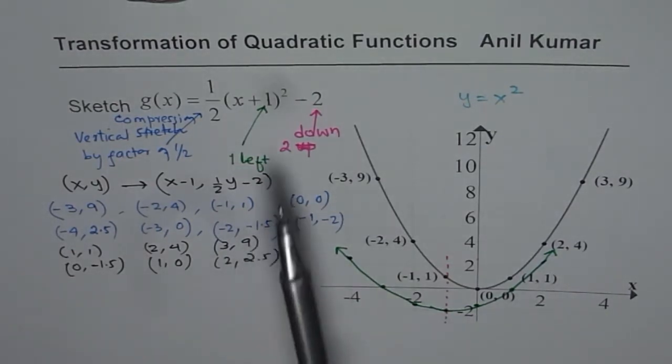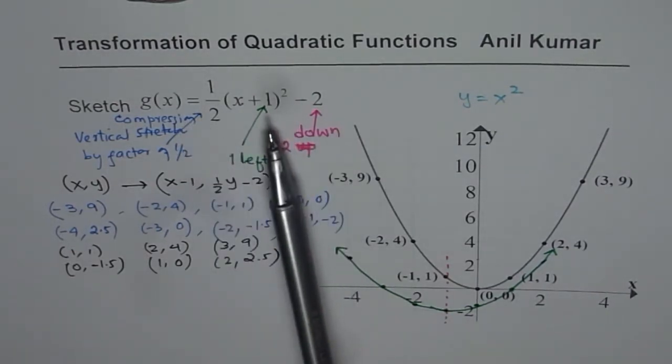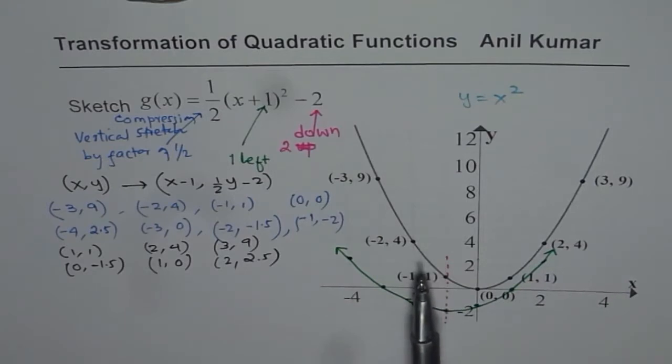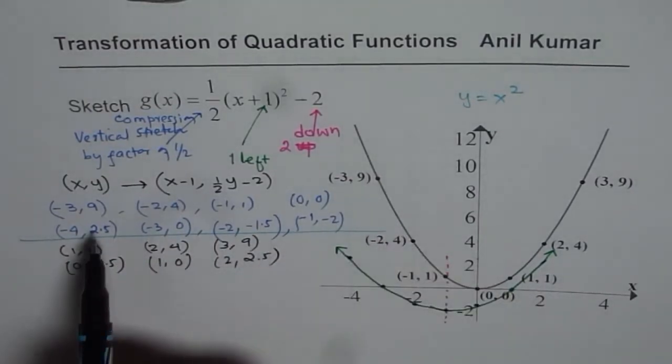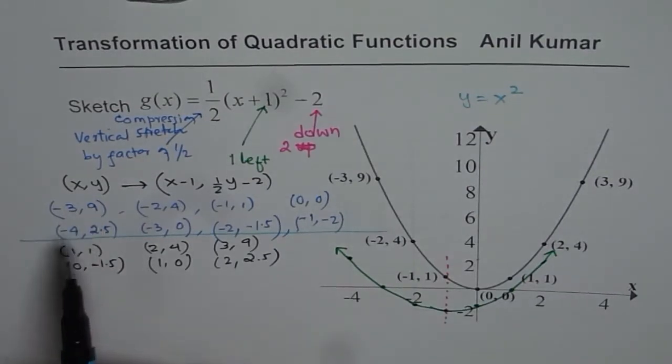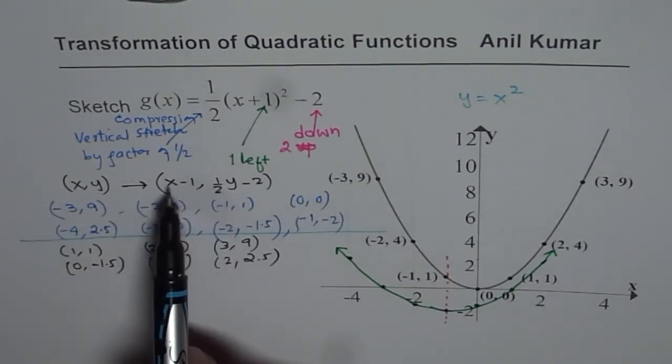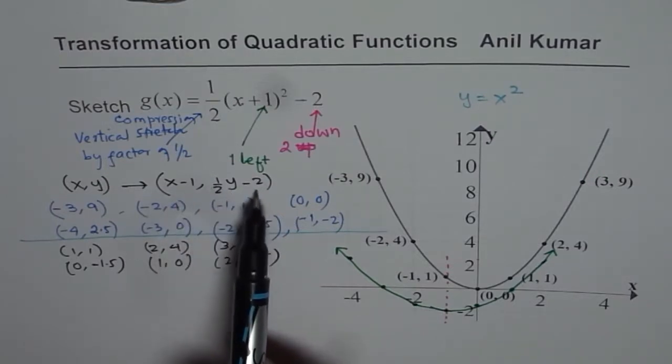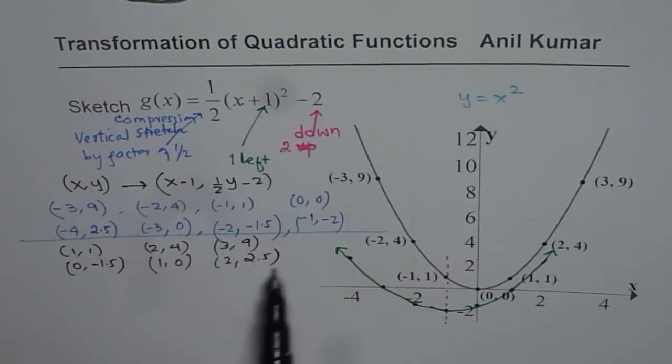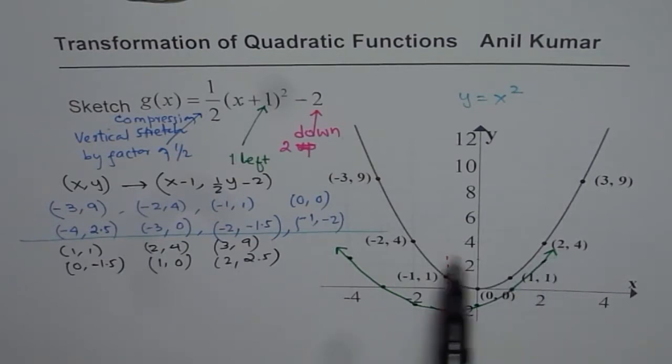So when there are a lot of transformations to be done, it becomes messy. You could actually apply this image points method. So we did apply the image points for all these 7 points. First, the transformation is x-1 for x values, half of y minus 2 for y values. Once you get these set of points, you plot them and sketch. That is how you could do it.